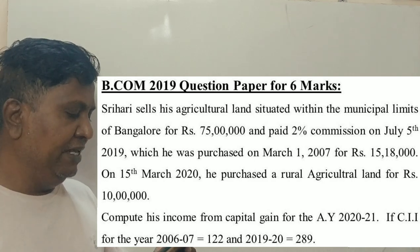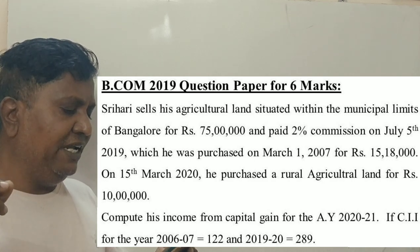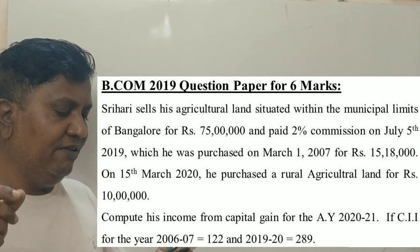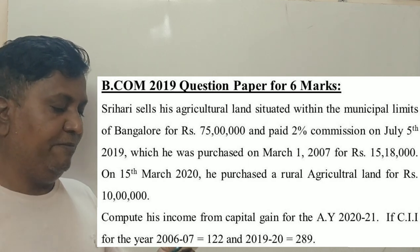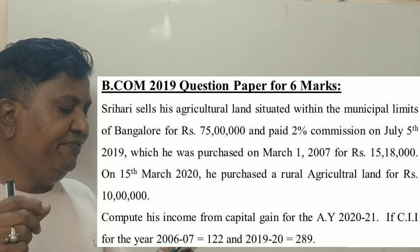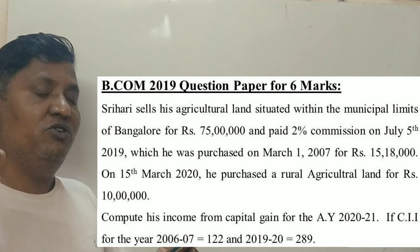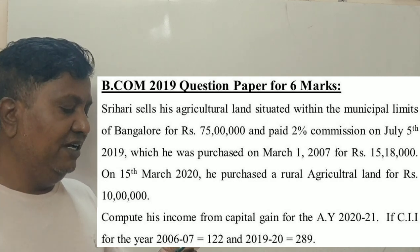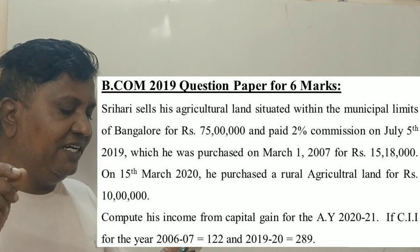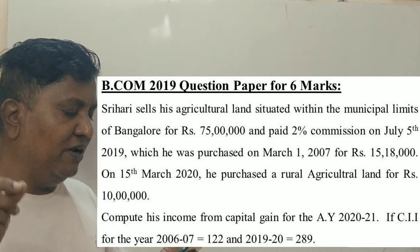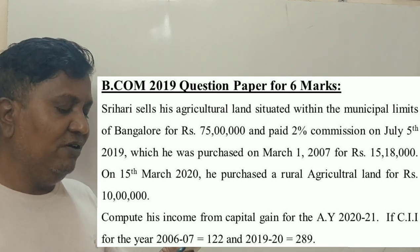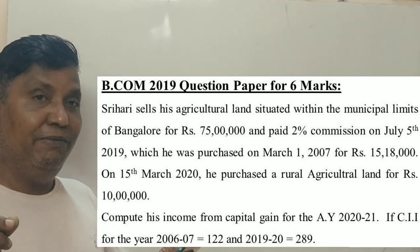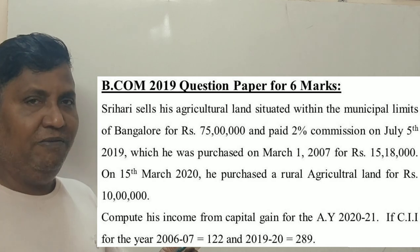The agricultural land was purchased by him on March 1st, 2007 for 15 lakhs 18,000 rupees. On 15th March 2020, he purchased a rural agricultural land for 10 lakh rupees. Compute his income from capital gain for the assessment year 2020-21.